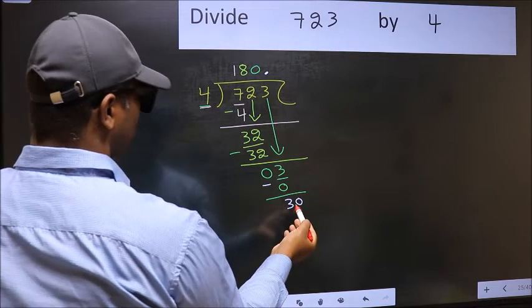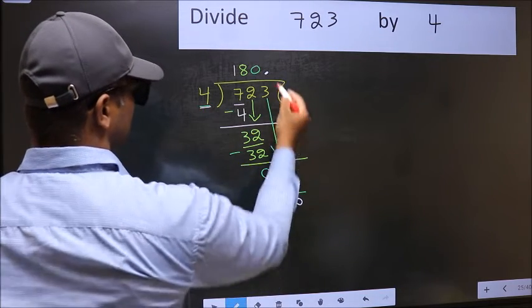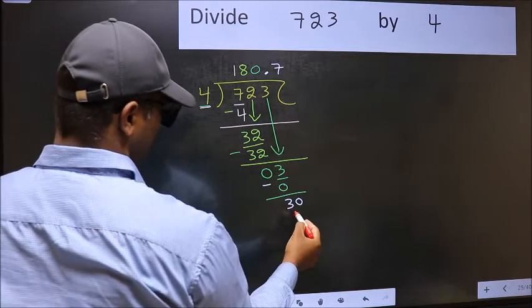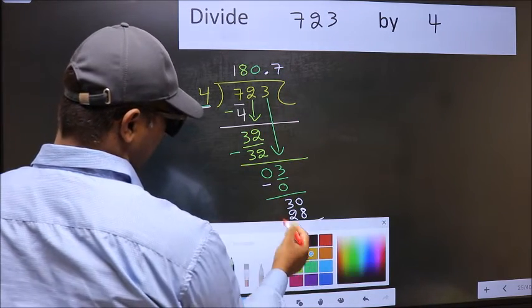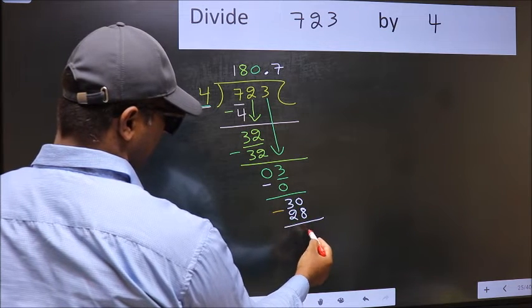So 30. A number close to 30 in 4 table is, 4 sevens, 28. Now you should subtract. 30 minus 28, 2.